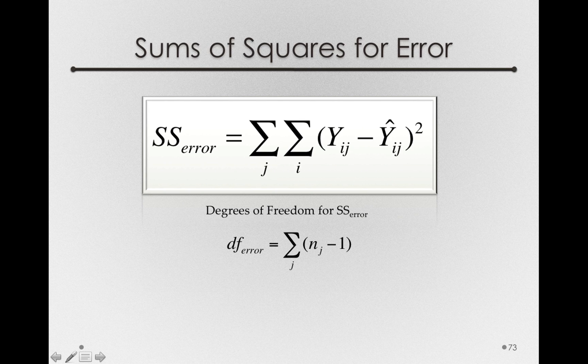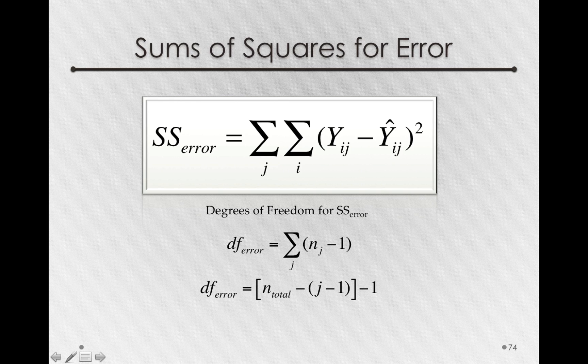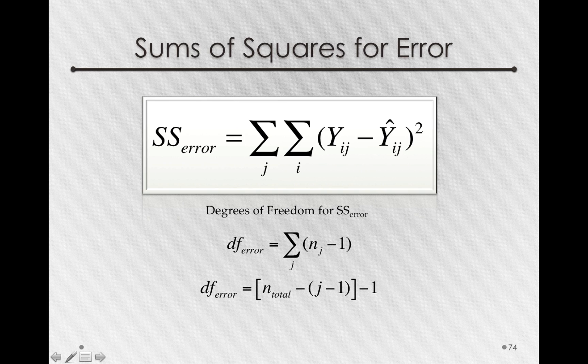Another way to think of degrees of freedom is a counter for the number of things we estimated. So every time we estimate a population parameter, we lose a degree of freedom. A final way to calculate degrees of freedom for error is taking the total number of observations we have, minus the degrees of freedom we use for our treatment offsets, minus the 1 degree of freedom we used for calculating the grand mean.